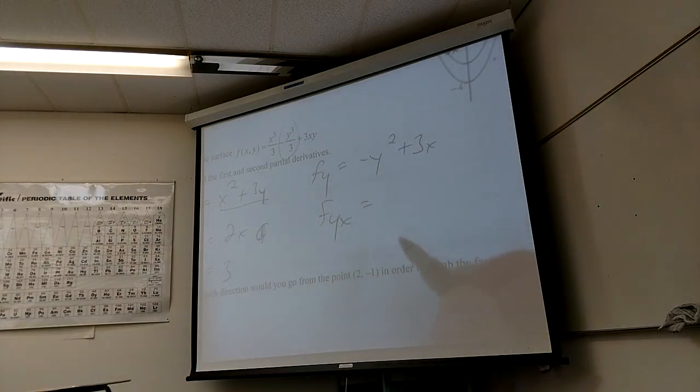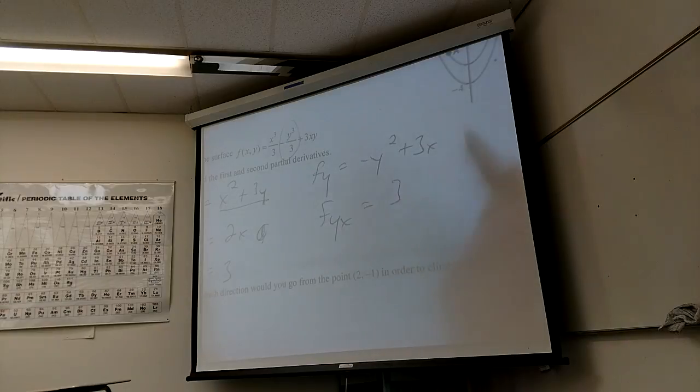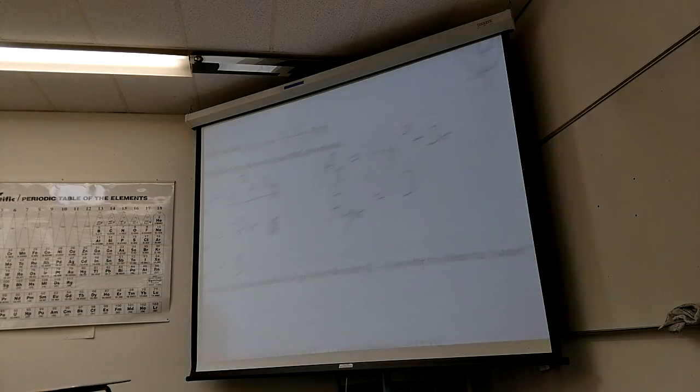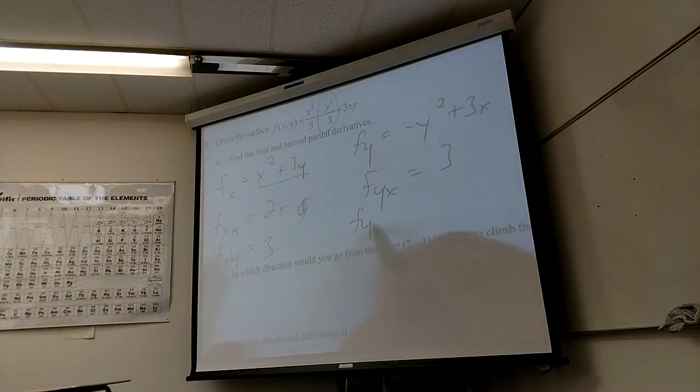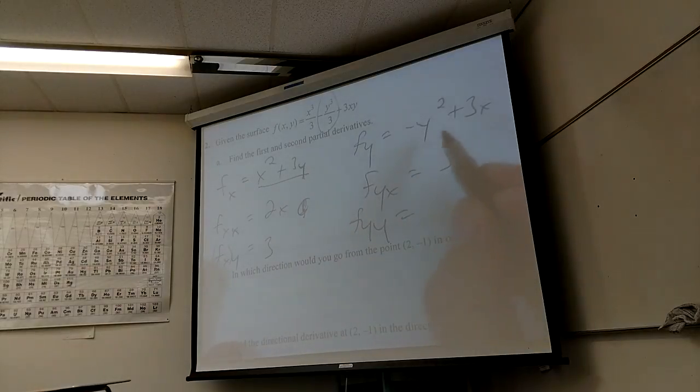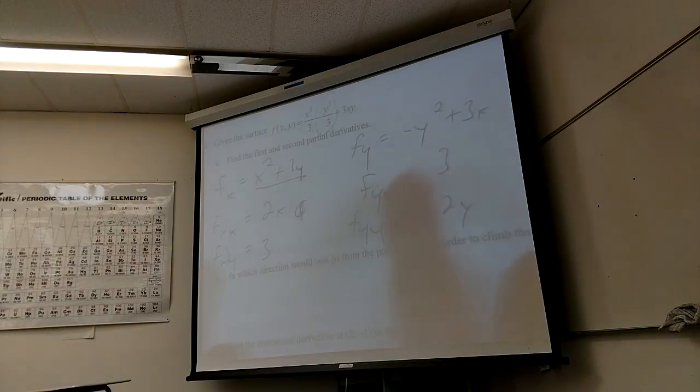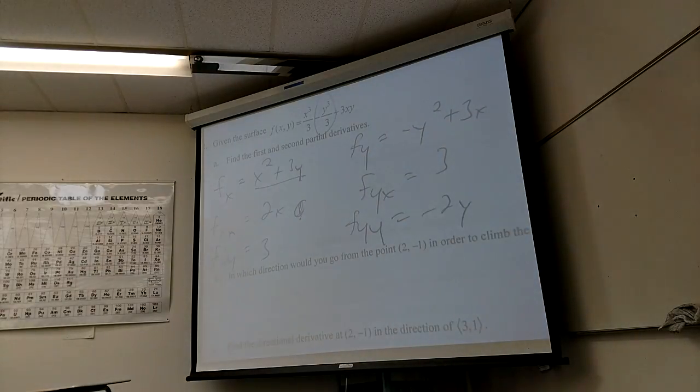But you don't have, don't just put 3 there. Actually make sure that you do get 3. Sure enough. Yeah. And then fyy. Negative 2y. Negative 2y. So this is the derivative with respect to y of fy. I like it.